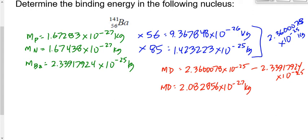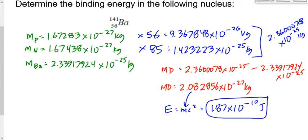Last step: multiply by the speed of light squared. E = mc² gives us 2.082856 × 10⁻²⁷ × (3 × 10⁸)² = 1.87 × 10⁻¹⁰ joules. Since we used standard units throughout, the answer is in joules. Regarding significant figures: the speed of light on your data sheet is 3.00 × 10⁸, so we round to three significant digits.